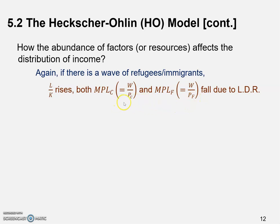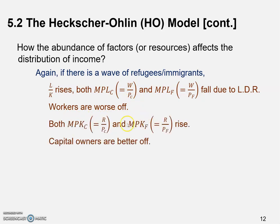The marginal product of labor equals the real wage: w/Pc for the cloth sector and w/Pf for the food sector. So workers are going to be worse off — regardless of whether they purchase cloth or food with their wage, they'll purchase fewer units for a given nominal wage. Workers are certainly worse off.